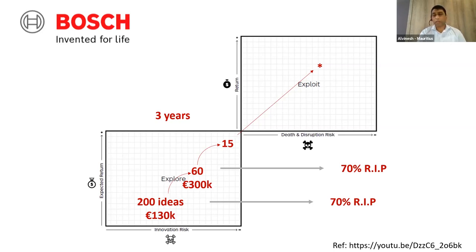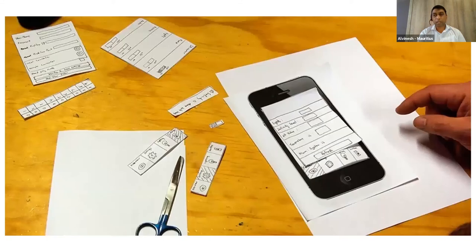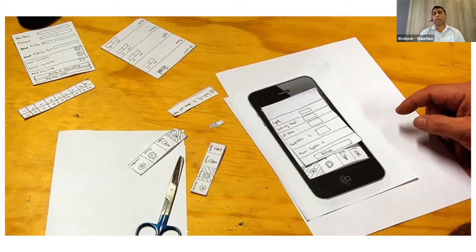Examples of prototypes include digital prototypes, such as wireframes when you're trying to develop a mobile app. Eric Ries advocates the use of MVPs — minimum viable products — when you want to test your product with customers on the market. You can also have physical prototypes or experience prototypes.